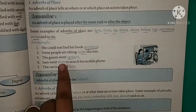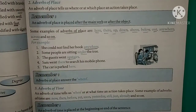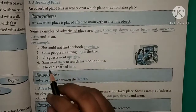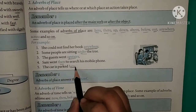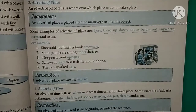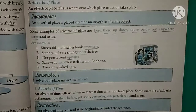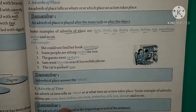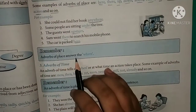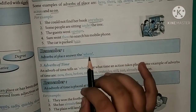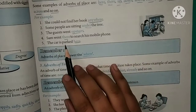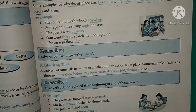Examples: 'She could not find her book anywhere' — 'anywhere' is the adverb of place. 'Some people are sitting under the tree' — 'under' shows the position/place. 'The guests went upstairs' — 'upstairs' tells location. 'Sam went there to search his mobile phone' — 'there' shows place. 'The car is parked here.' Adverb of place answers the question 'where'.